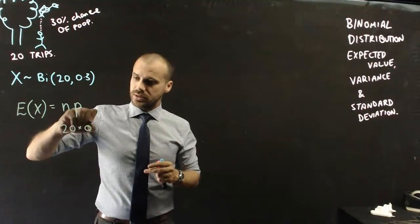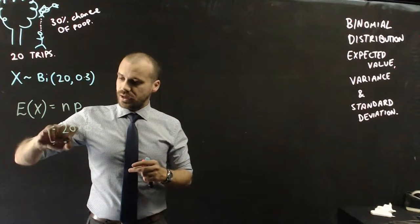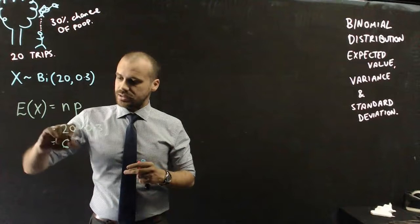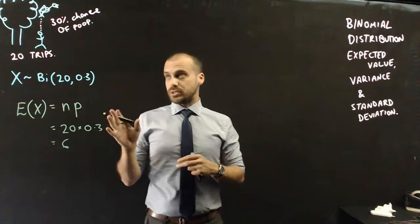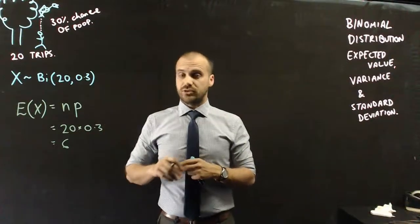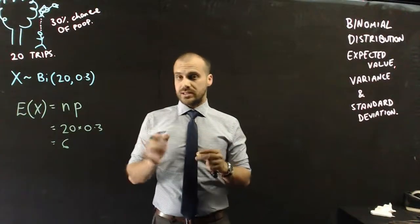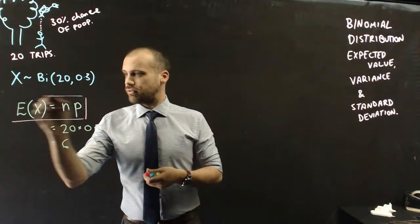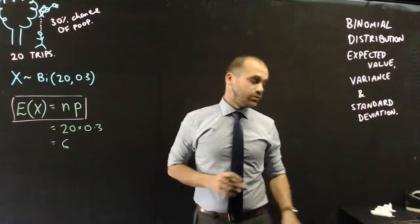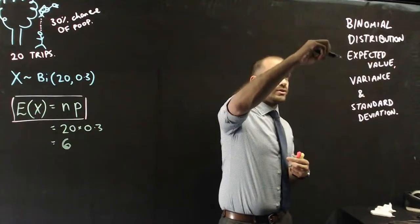20 times 0.3. That should be 6. So, you would expect to get pooped on 6 times if you walked under that tree, 20 times. That's expected value. This is the important formula. Very straightforward. So, that's expected value looked after.